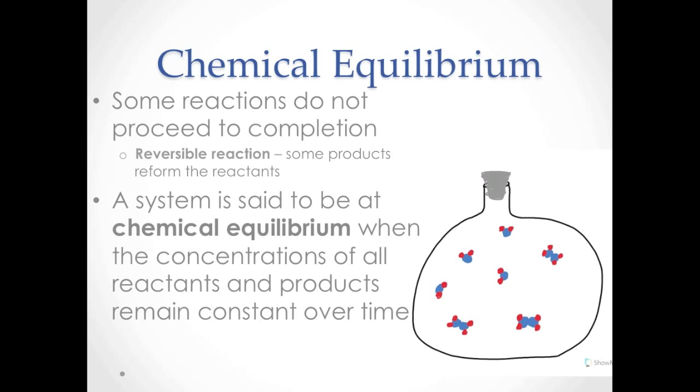Both the forward and the reverse reaction will continue until a chemical equilibrium is established. In this model, once the equilibrium is established, four NO2 molecules and three N2O4 molecules are present, and the concentrations of those molecules will remain constant over time.